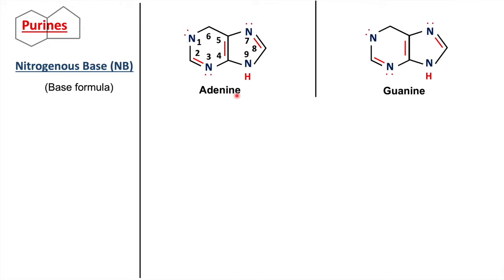Now the difference between adenine and guanine: in adenine there is an additional double bond between position one and carbon six, and an NH2 group attached to carbon-6 position. In guanine, there is an NH2 group attached to carbon-2 position of the six-carbon ring, and a carbonyl group attached to carbon-6 position.